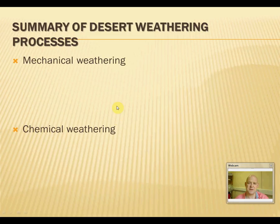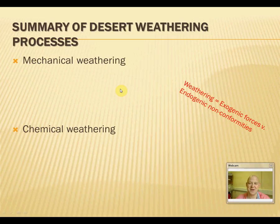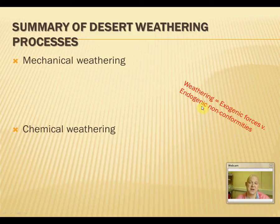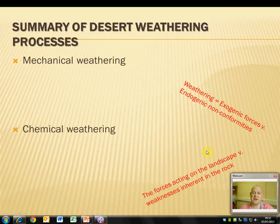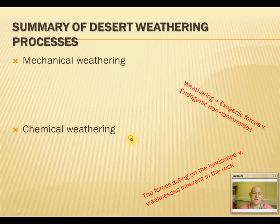The two types of weathering are mechanical/physical weathering and chemical weathering. All weathering processes — I love this jargon — are essentially exogenic forces acting on endogenic nonconformities. The exogenic forces are the forces of climate acting from outside the rock; the endogenic nonconformities relate to the weaknesses and structures within the rock. These two elements — forces acting on the landscape versus weaknesses inherent in the rock — are really worth remembering.